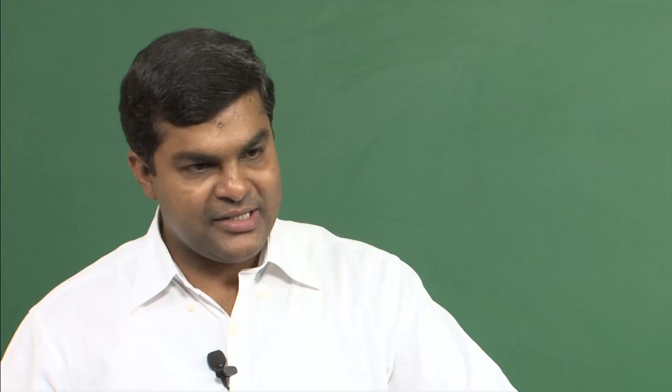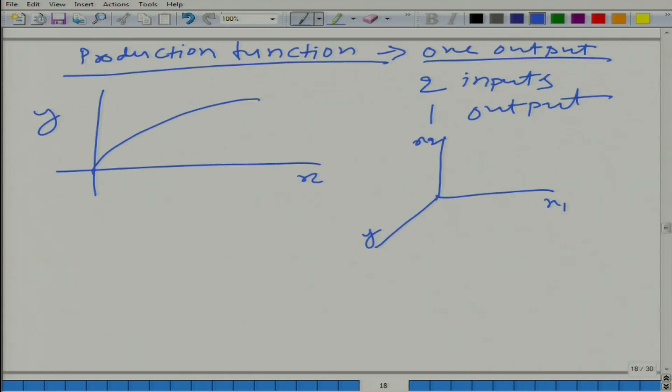We will have a three dimensional graph. We can have here input 1, input 2, and on the third axis we can have output, that is one way to do it. But this three dimensional graph is a little less tractable than a two dimensional graph.